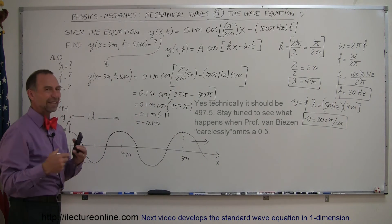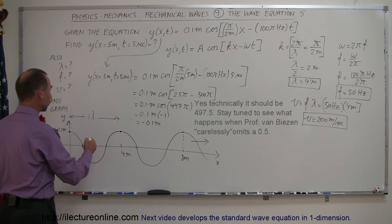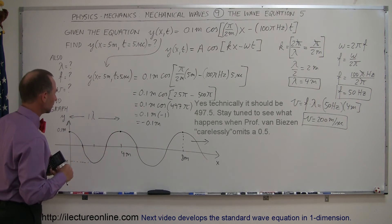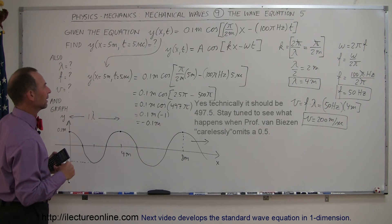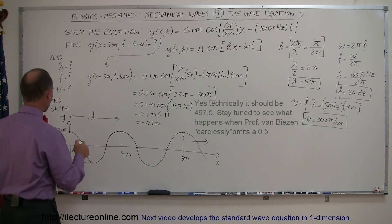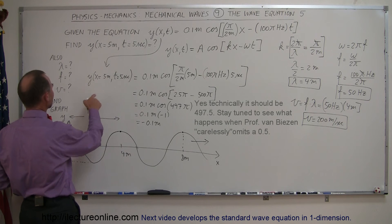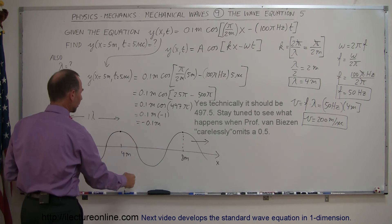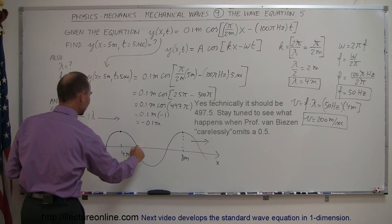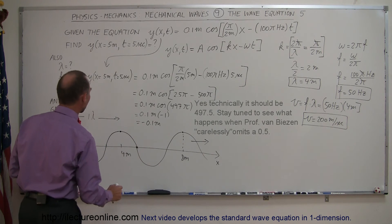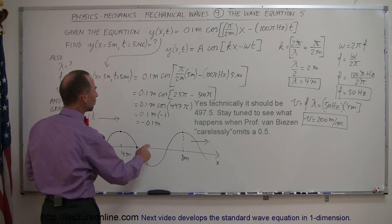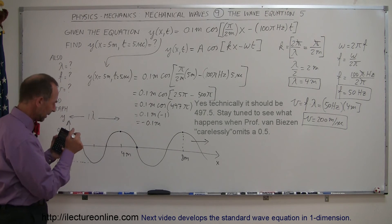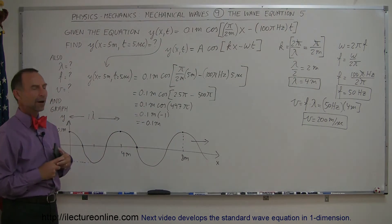Since it's an integer number of wavelengths, after 5 seconds the wave would look exactly the same. Now what's interesting is that I'm trying to verify that the displacement would be minus 0.1 meter at 5 meters. But that doesn't seem to be the case when I graph it because it looks like the displacement should be zero. So I have a slight discrepancy here. Let me take a quick look and I'll be right back.